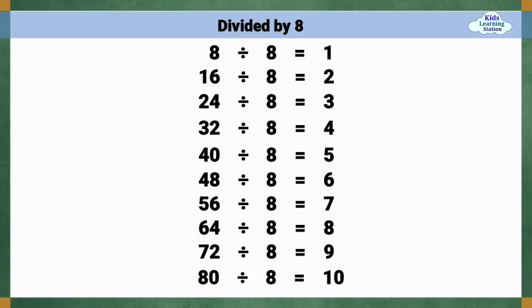Divided by 8. 8 divided by 8 equals 1. 16 divided by 8 equals 2. 24 divided by 8 equals 3. 48 divided by 8 equals 6. 56 divided by 8 equals 7. 64 divided by 8 equals 8. 72 divided by 8 equals 9. 80 divided by 8 equals 10.